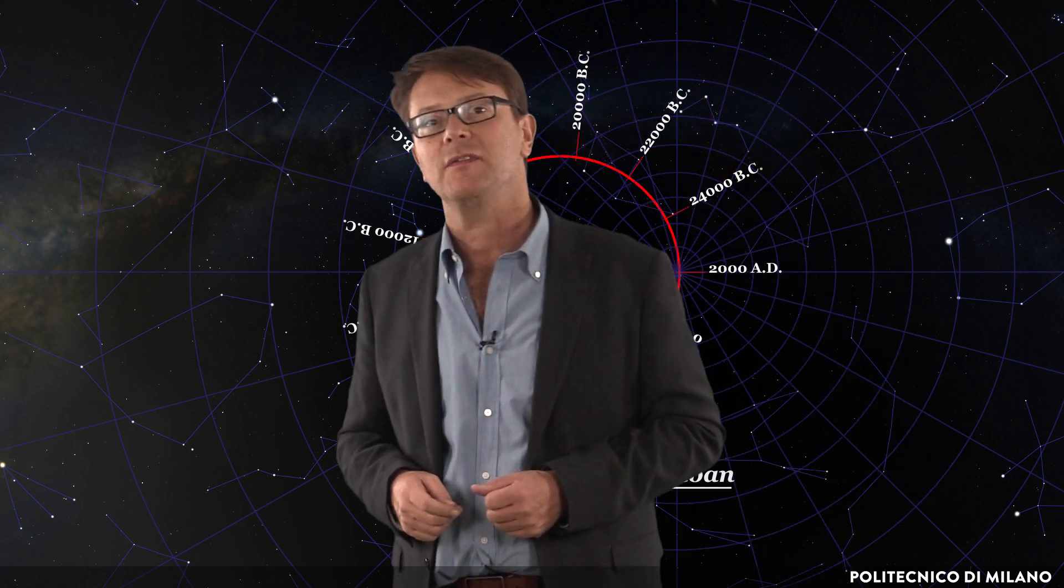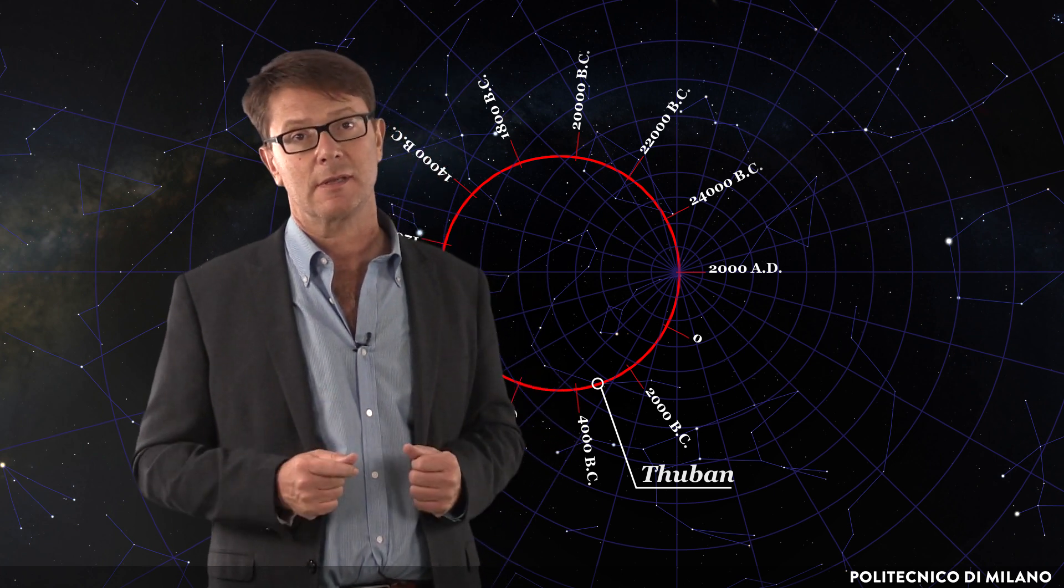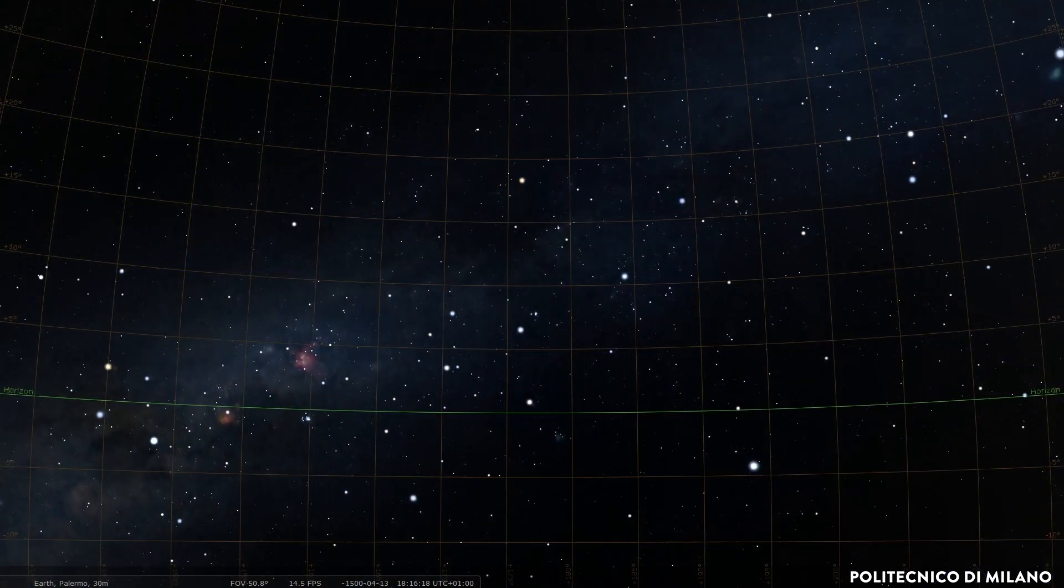By the way, the South Pole is always in a dark zone, as its path never intersects a brilliant star. Clearly, the declinations of all the stars are subject to this precessional shift.